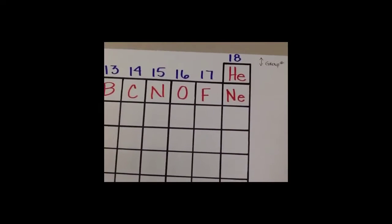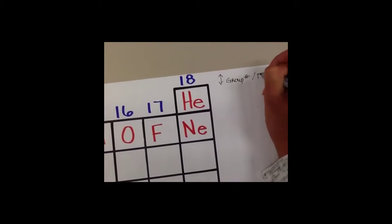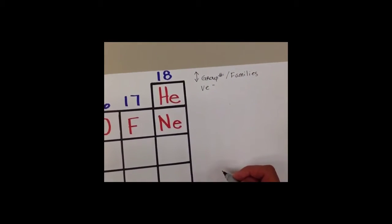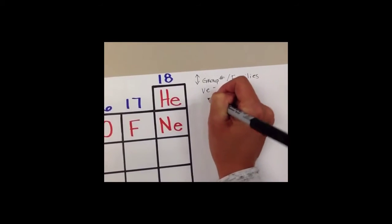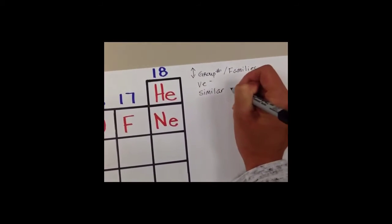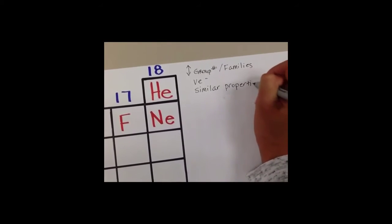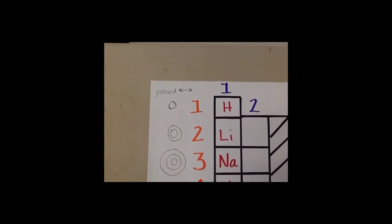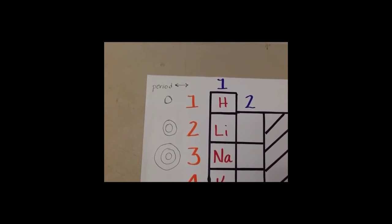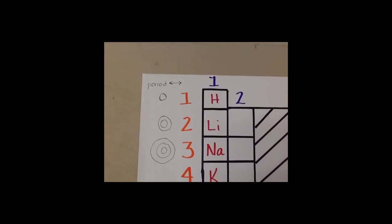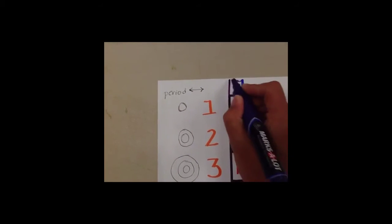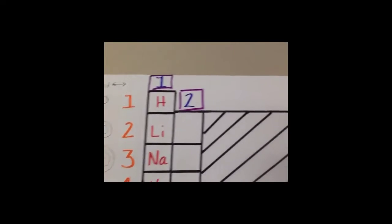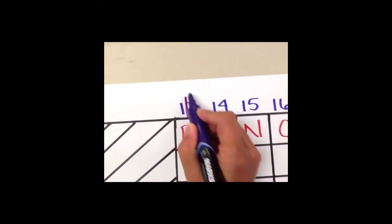Group numbers tell us valence electrons — they tell us the valence electrons. They also tell us that elements in the same group have similar properties. Hydrogen had one valence electron, lithium had one valence electron, sodium had one valence electron — so we know that group 1 has one valence electron. Group 2 has two valence electrons. Group 13 has three valence electrons.